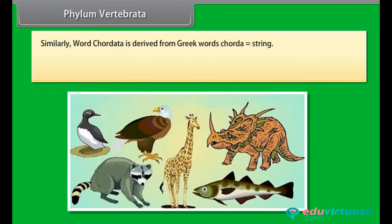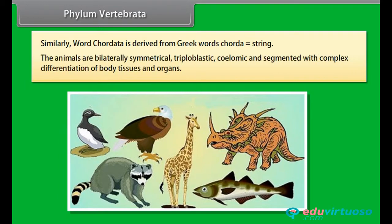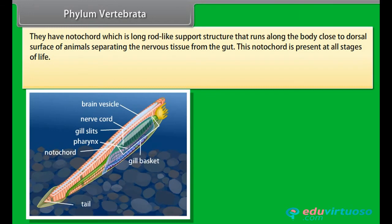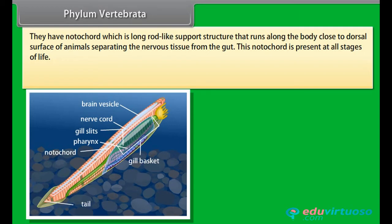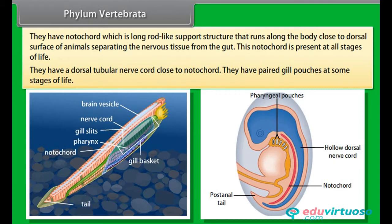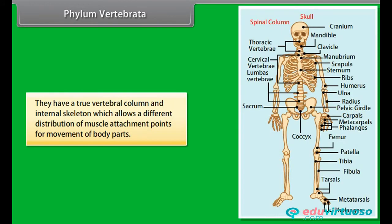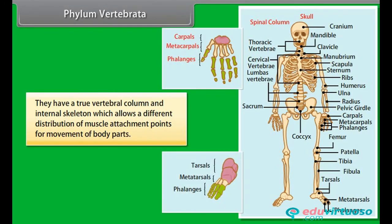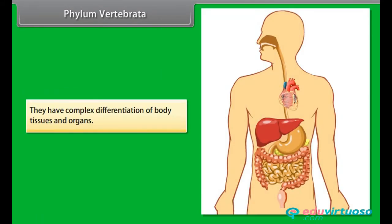Phylum Vertebrata. The word Chordata is derived from Greek word chorda, meaning string. The animals are bilaterally symmetrical, triploblastic, coelomic, and segmented with complex differentiation of body tissues and organs. They have a notochord, which is a long rod-like support structure that runs along the body close to the dorsal surface of animals, separating the nervous tissue from the gut. This notochord is present at all stages of life. They have a dorsal tubular nerve cord close to the notochord. They have paired gill pouches at some stages of life.